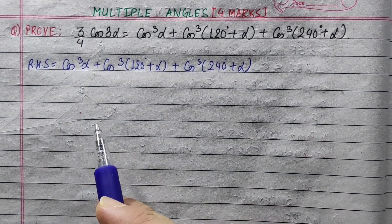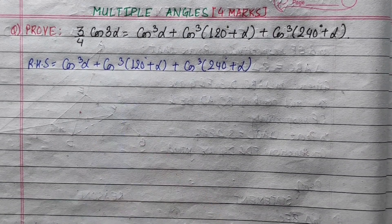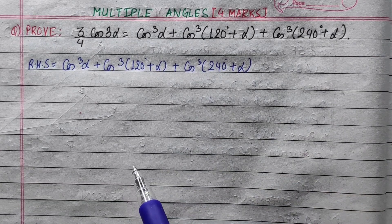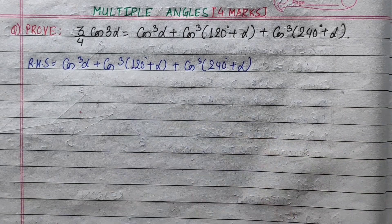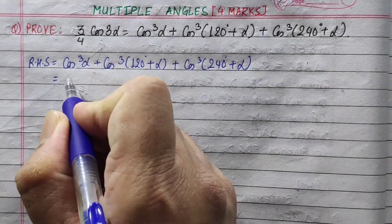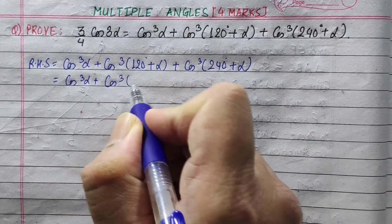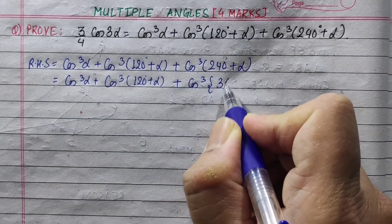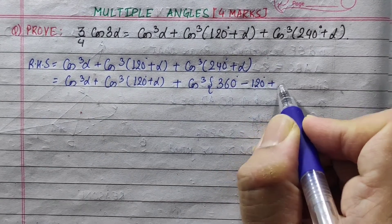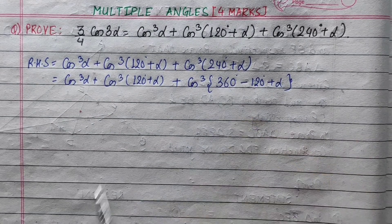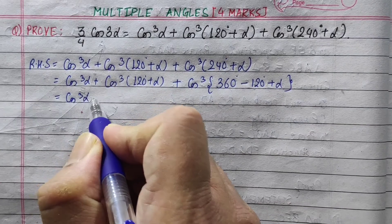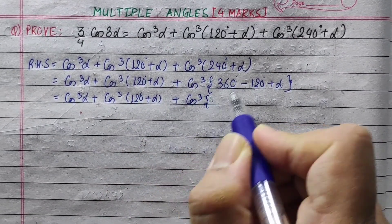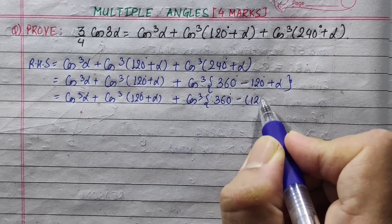Now, what do we have to prove? This cube — we have to do it three times. Let's note that if we take 240 plus 120, that gives 360. So cos³(240 plus α) becomes cos³(360 minus 120 minus α), which equals cos³(120 minus α).